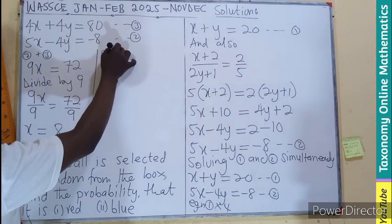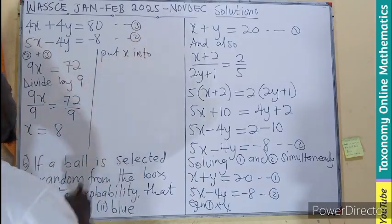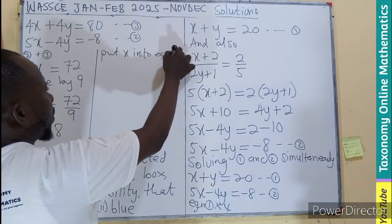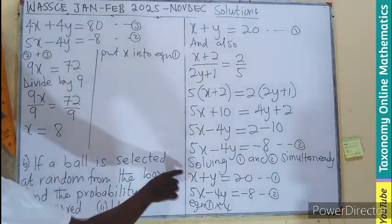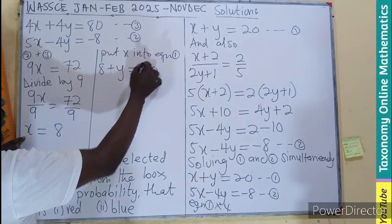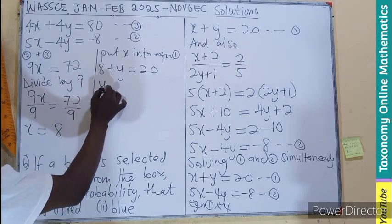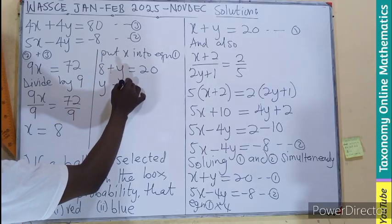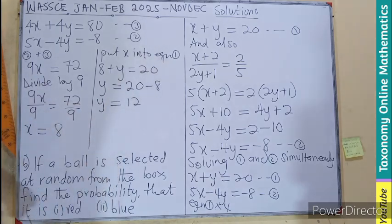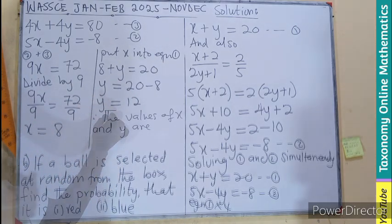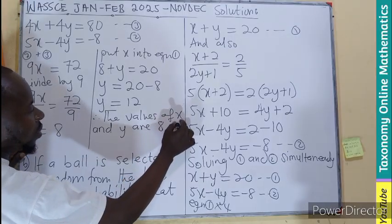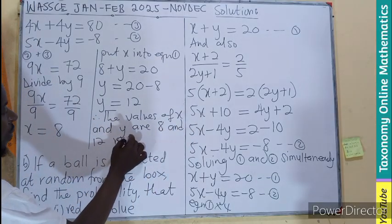So let's substitute X back into equation 1. Whenever I see X, I put in 8: 8 plus Y equals 20. I need Y, so let's subtract 8 from both sides. That means Y equals 12.